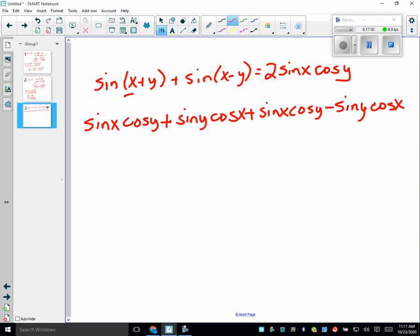Look what happens, they subtract out. This and this is gone. Do I have two just alike? Yeah. So do I have 2 sine x cosine y equals 2 sine x cosine y? Isn't that what we're trying to do, is prove they equal each other? Isn't that what an identity does?